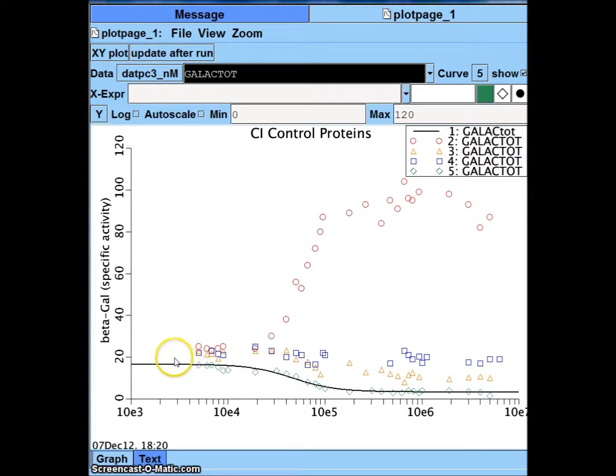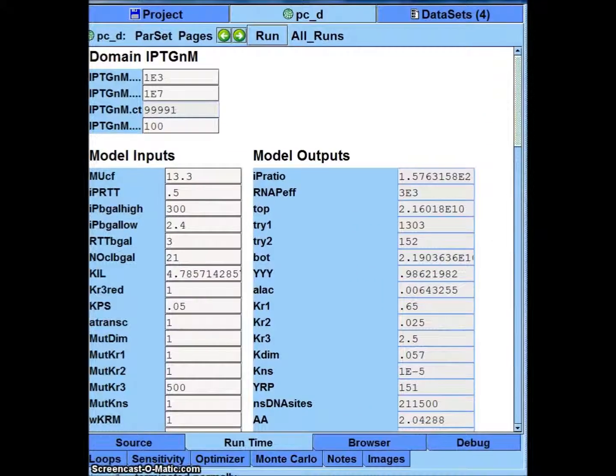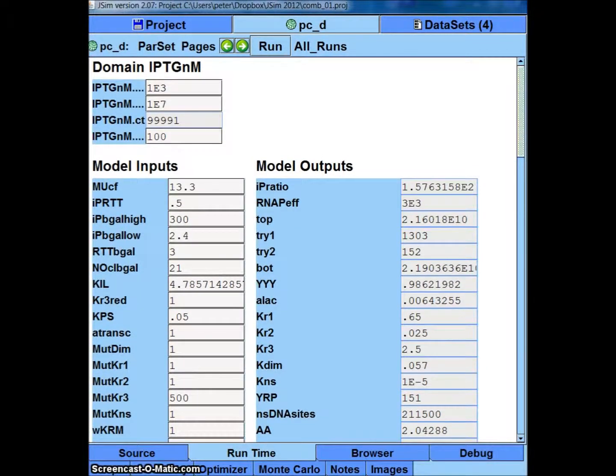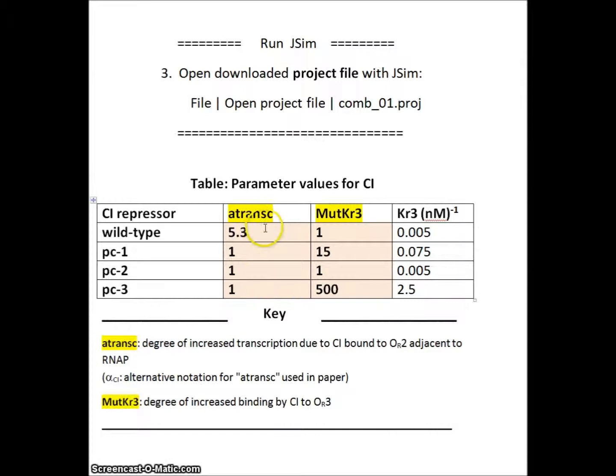Now we wish to simulate the wild type data, these red circles. So we go back here. Now we need our table of values. For wild type, activation of transcription factor is 5.3 and there's no increased binding to OR3, so that's 1. So 5.3 and 1.